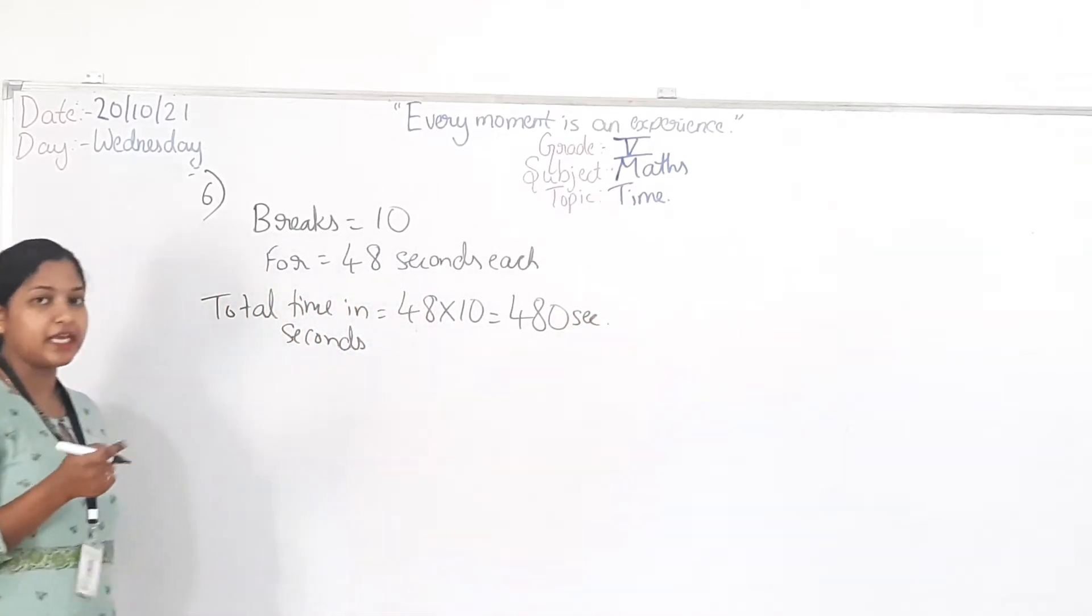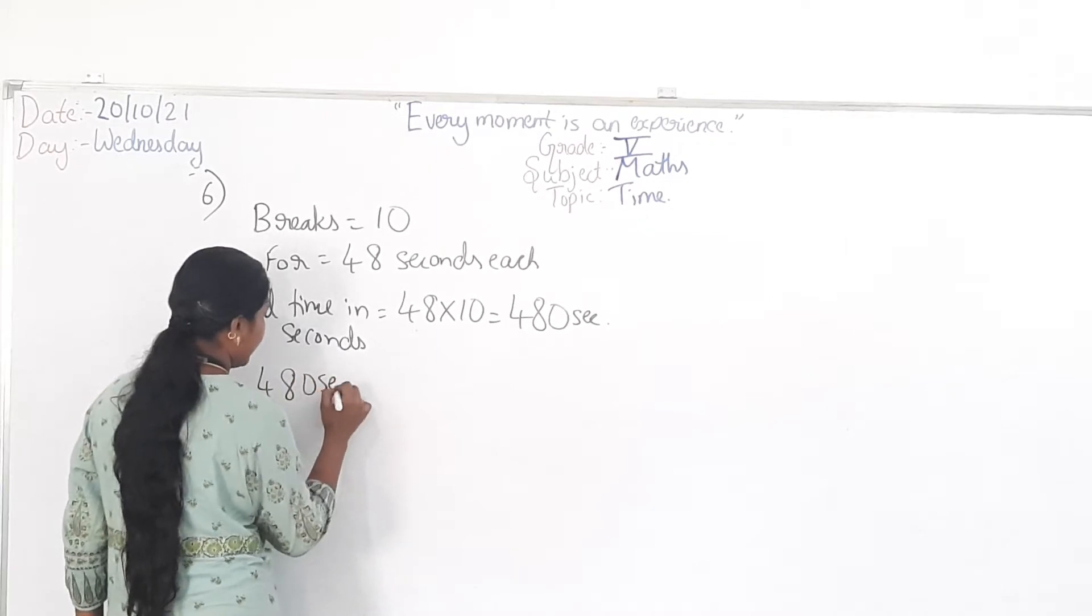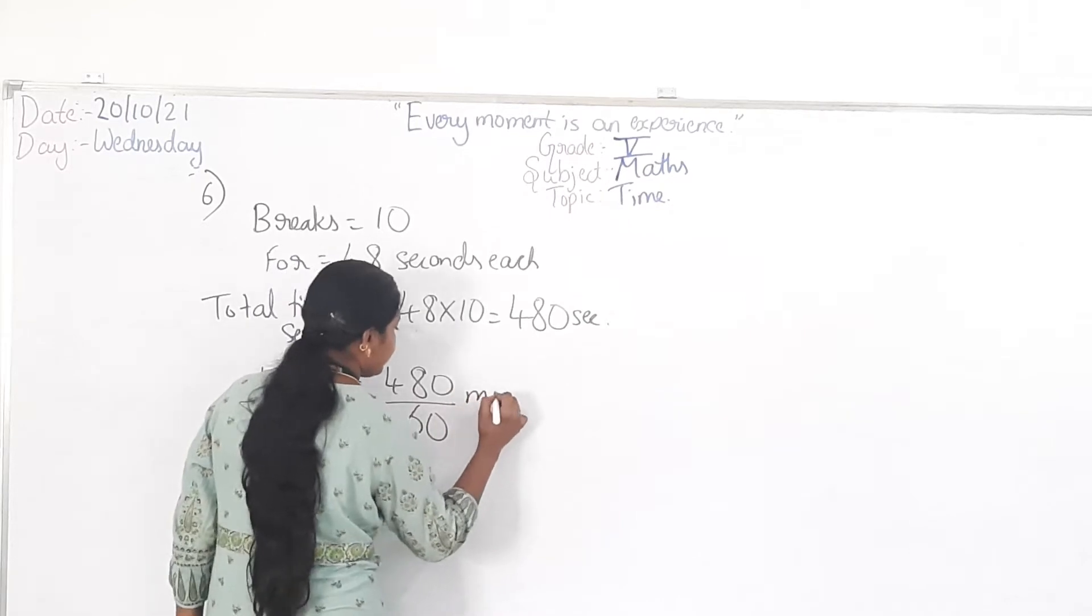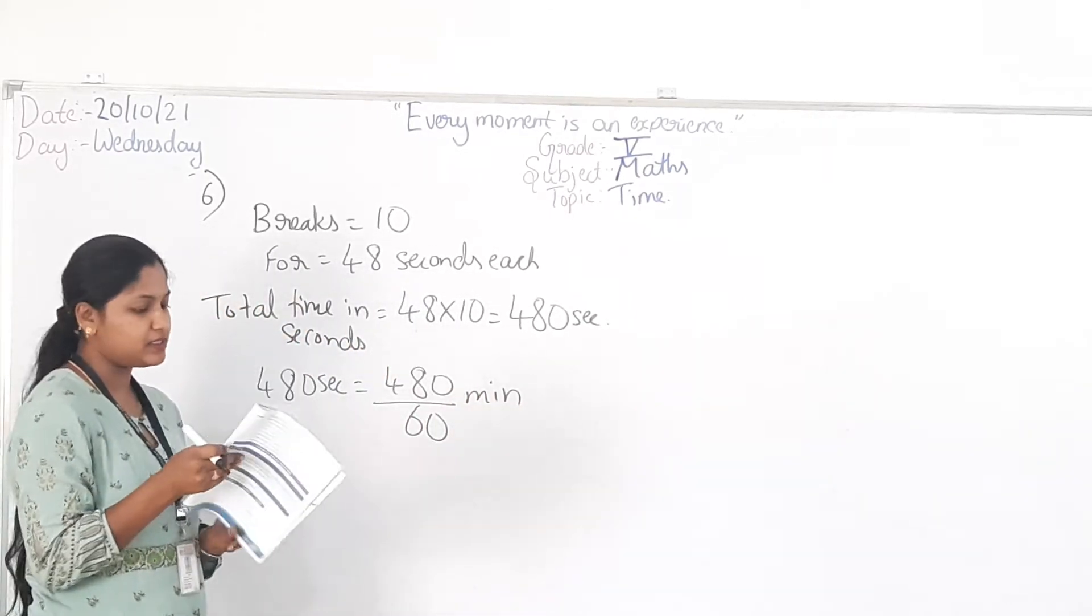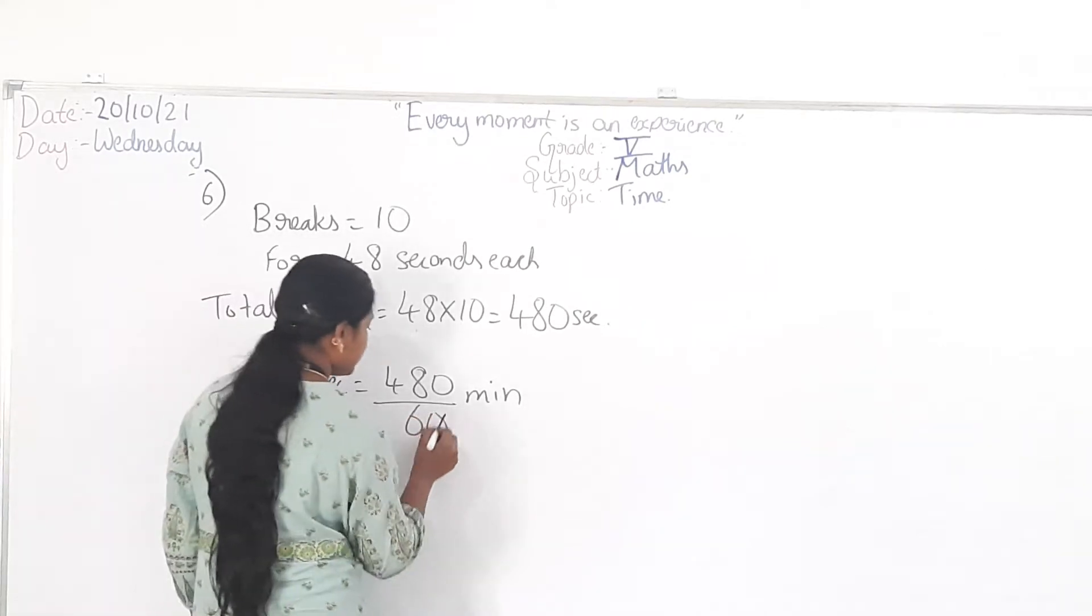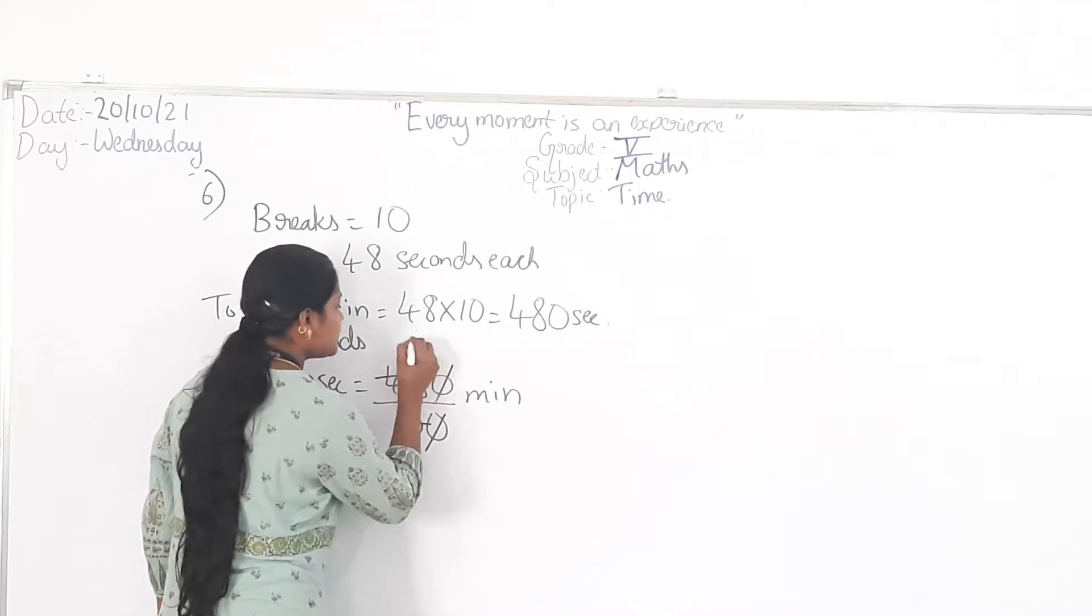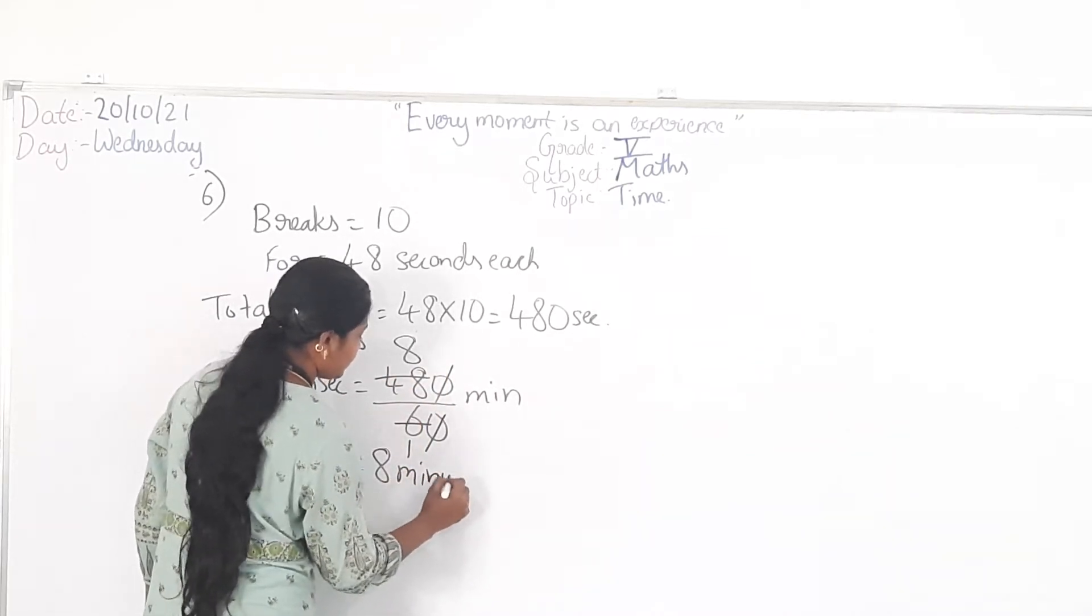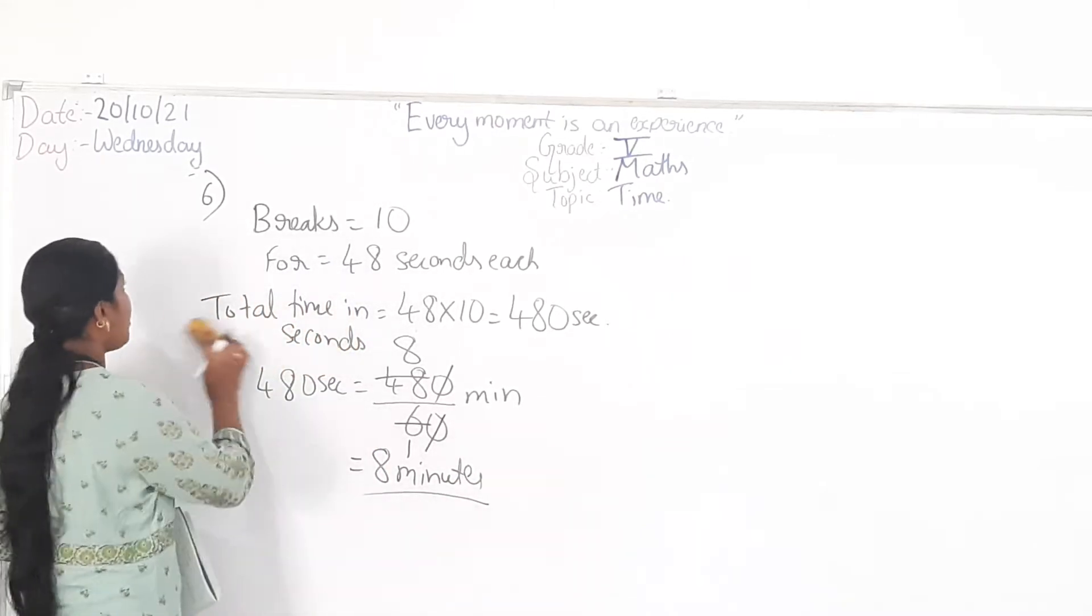Now you have to convert the seconds into minutes. So that is 480 seconds equals 480 divided by 60 minutes. So the answer is 8 minutes. Got it?